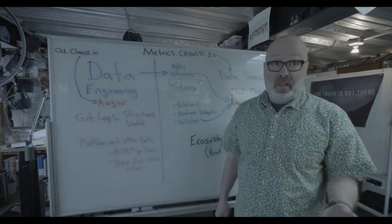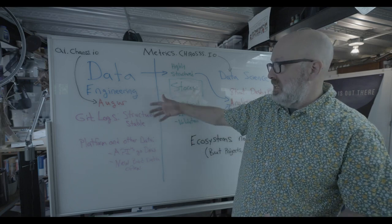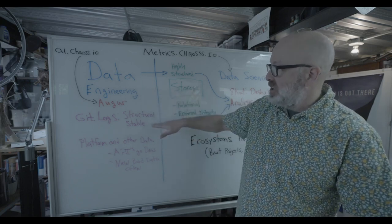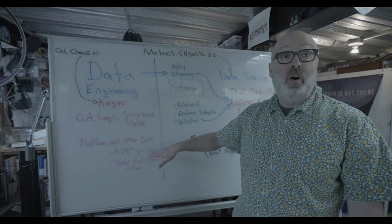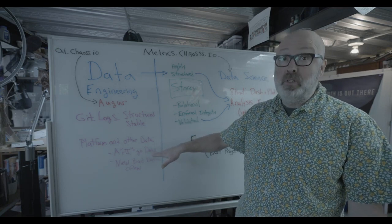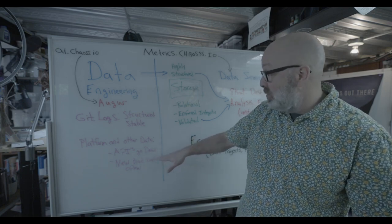What we've accomplished with Augur over the last six to seven years is the ability and the technology to process structured and stable data in Git logs, but also unstructured and often changing data, sometimes including new forms of bad data available through platform APIs.